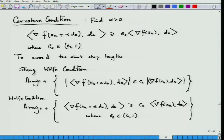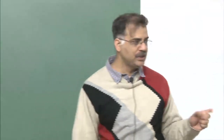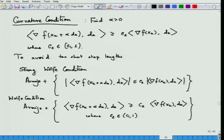Yesterday we were speaking about the Armijo condition plus this additional curvature condition, which combined with Armijo is called the Wolfe condition. The question is that it is very important that we have a much better geometric understanding of this Wolfe condition and how it avoids short step lengths. We will show that there exists an alpha which satisfies the Wolfe condition.